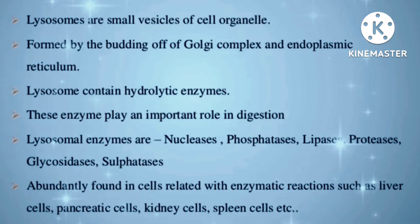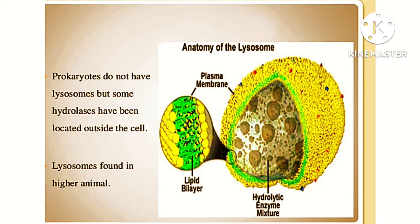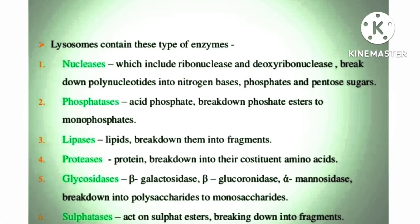The enzymes present in lysosomes include lipases, proteases, glycosidases, and sulfatases. These are abundant in organs which contain active metabolisms. The hydrolytic enzymes are enclosed within a phospholipid membrane and require acidic pH to function, combining with molecules to digest them.